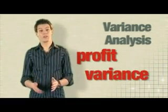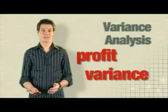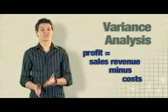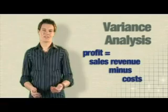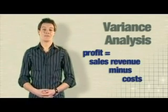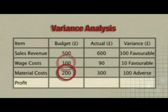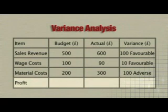From this table, you could work out the profit variance. Remember that profit is sales revenue minus costs. Budgeted revenue was £500, and total budgeted costs of wages and material costs added up to £300. So £500 revenue minus £300 costs gives a budgeted profit of £200.